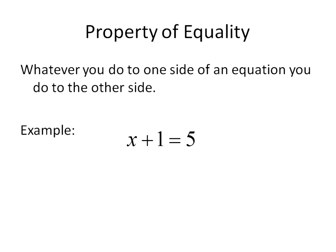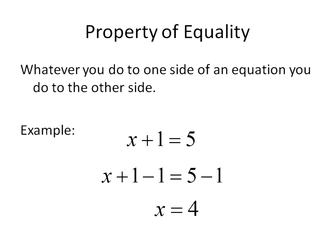First off, the property of equality. It says whatever you do to one side of an equation, you have to do to the other. Just a quick review. So here's an example: if I have x plus 1 is equal to 5, I would use the property of equality to subtract 1 from both sides. The reason I'm doing that is to get rid of this 1 and get x by itself — that's called isolating my variable. Because the opposite of plus 1 is minus 1, it gets rid of it. The equation stays balanced because we subtracted 1 from both sides. x is equal to 4.